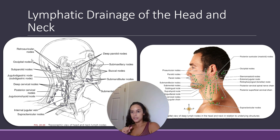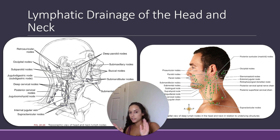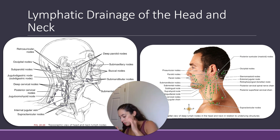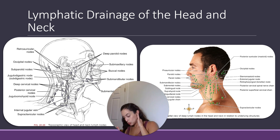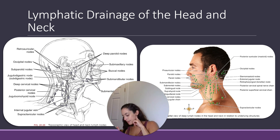Those were the occipital nodes. Next, we have the retroauricular lymph nodes — retro means behind, auricle is your ear — so these are the behind-the-ear lymph nodes, shown over here in this image. They are also known as the posterior auricular nodes, situated near the mastoid where the sternocleidomastoid muscle begins. They drain the scalp, the auricle, and the external acoustic meatus, and they provide efferent drainage to the superior deep cervical nodes.